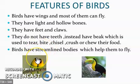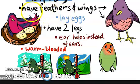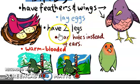Also, one more thing — birds lay eggs. Birds lay eggs. Birds eggs dete hain. You can see a bird — they have feathers and wings. Udne ke liye unke wings hote hain, egg laying hoti hain, aur ear ki jagah ear holes hote hain.